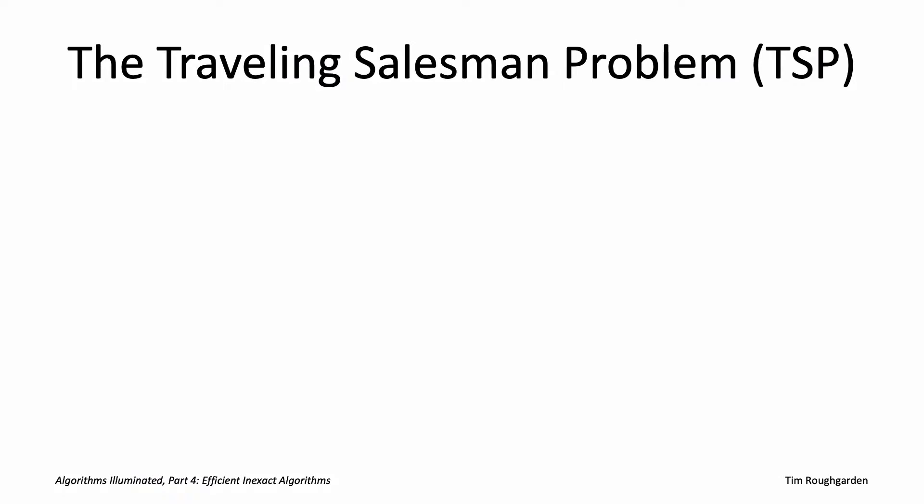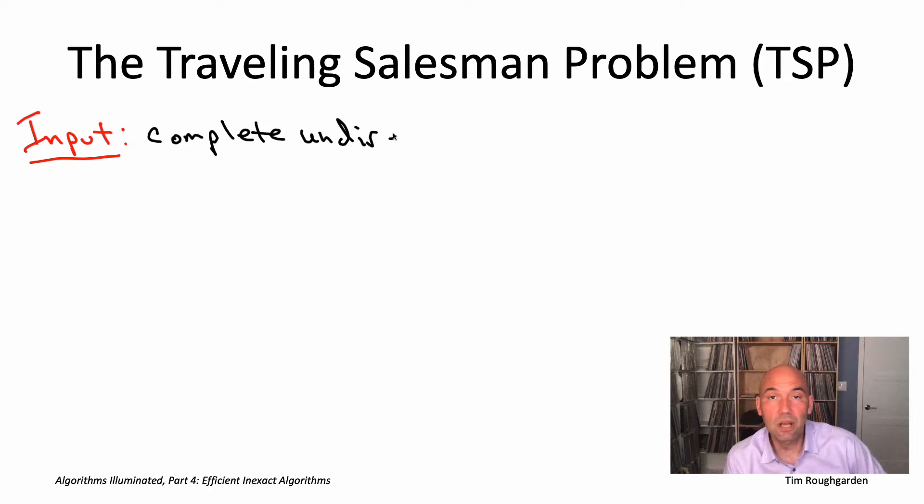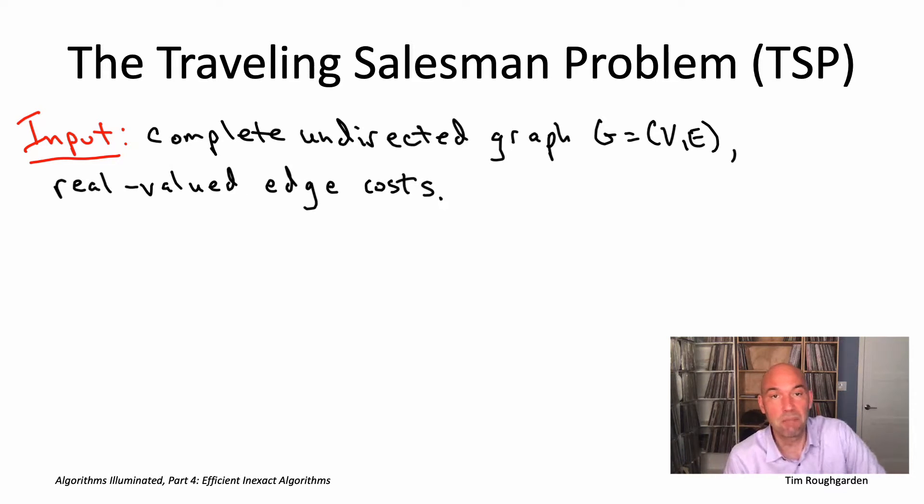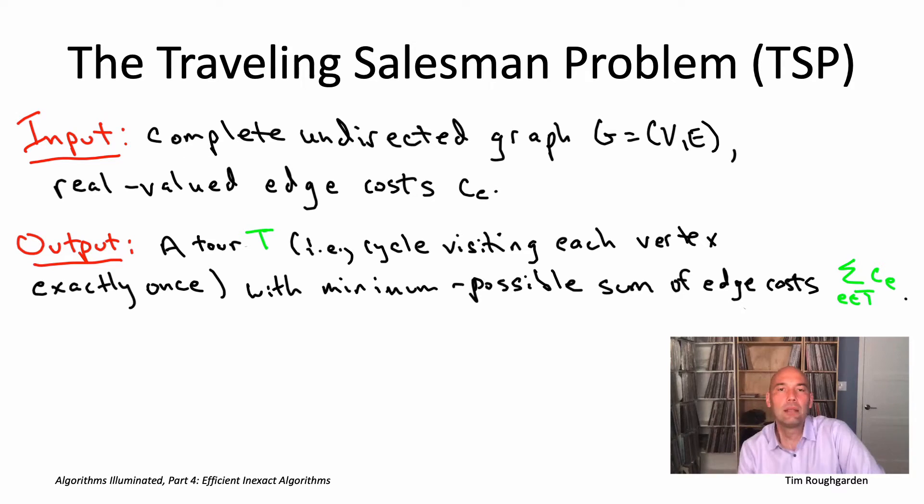Let me remind you about the definition of the traveling salesman problem. The input is a complete undirected graph G=(V,E), with n vertices and all n choose 2 undirected edges present. Each edge has a real valued cost c_e. The goal is to compute a tour - a cycle that visits every vertex exactly once - with minimum possible sum of edge costs.